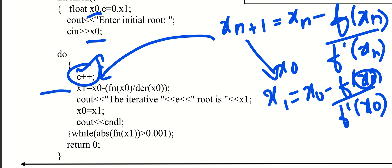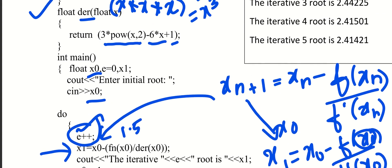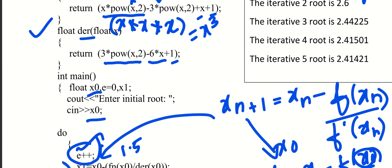Next, we continue to adjust. f of x0 — the value of x0 is 1.5. We use that value in the function.